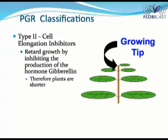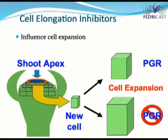There are a number of PGRs available to growers, and not all of them work the same. The ones which inhibit GA production are called type 2 cell elongation inhibitors. Cell elongation inhibitors influence the degree of cell expansion. New cells are produced at the growing tip of the plant. Over time, the cells begin to grow. Without a PGR, the cells can stretch and grow. PGRs play a role in limiting the amount of expansion which occurs.